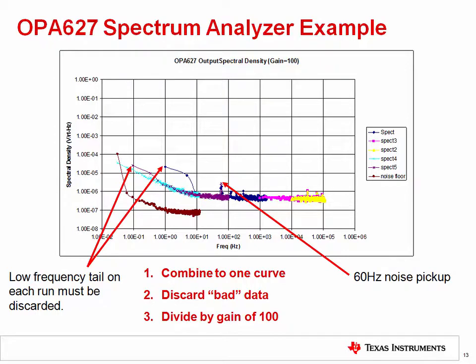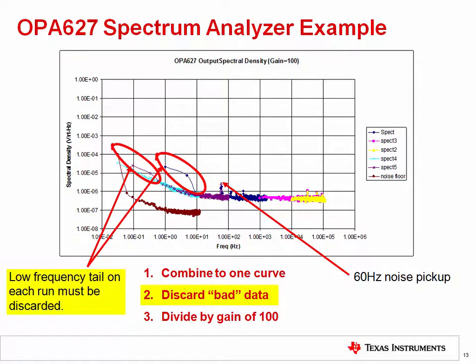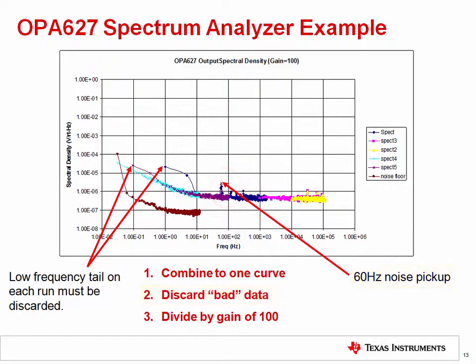After the data is collected, some adjustments are needed to get the final spectral density curve. First, combine the separate frequency ranges into one curve. Second, there is a strange tail at low frequencies — a common anomaly associated with spectrum analyzers — which should be eliminated. You may also see extrinsic noise such as 60 Hz pickup and its harmonics; ideally this can be eliminated through proper shielding. Finally, divide the measured results by the circuit's noise gain in order to refer the noise back to the amplifier input.